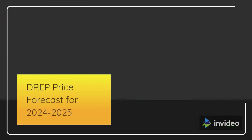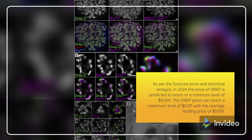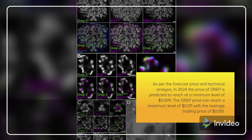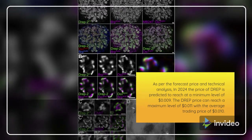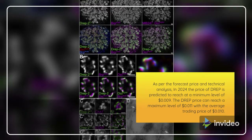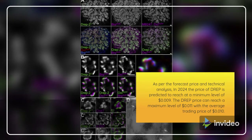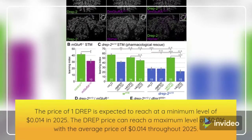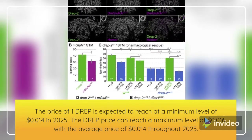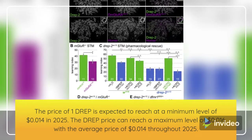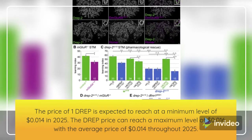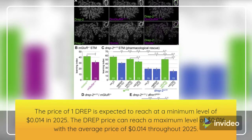DREP Price Forecast for 2024 to 2025. As per the forecast and technical analysis, in 2024 the price of DREP is predicted to reach a minimum level of $0.009. The DREP price can reach a maximum level of $0.011 with the average trading price of $0.010. In 2025, the price of DREP is expected to reach a minimum level of $0.014, with a maximum level of $0.016 and an average price of $0.014 throughout 2025.